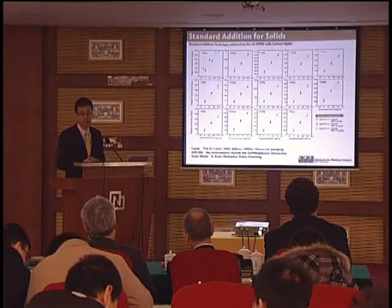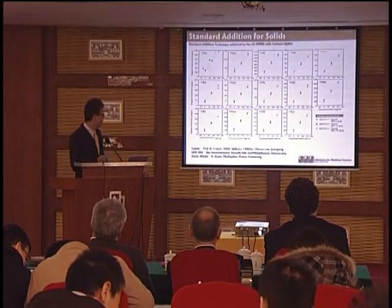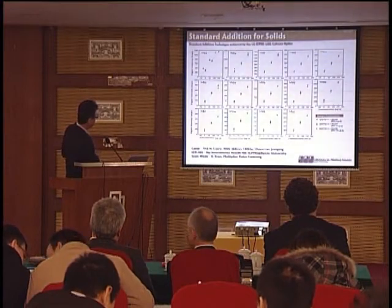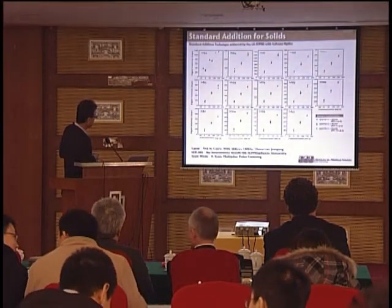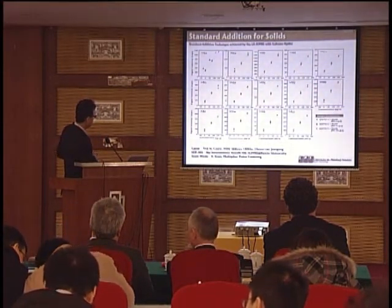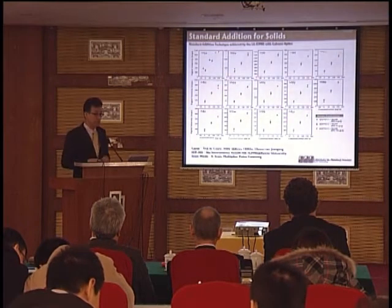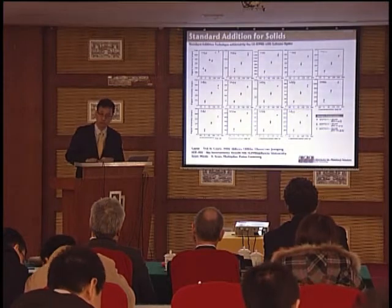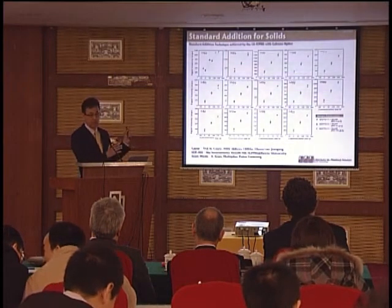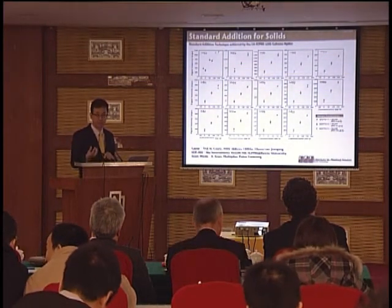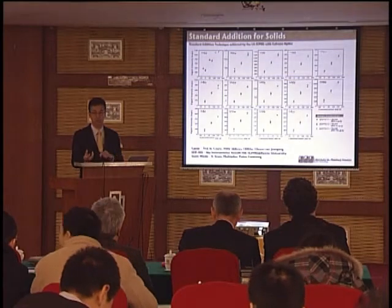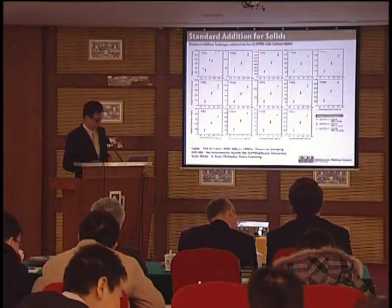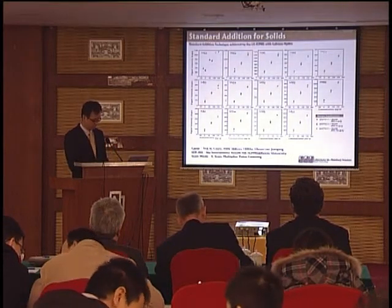This is an example of the data obtained from a rare earth standard. A good linear correlation can be found. The offset is the concentration of the rare earth element in the unknown samples. In this case, the unknown sample is NIST 612 glass. So we can determine the trace element in the unknown samples using standard addition. This is much more flexible for us.